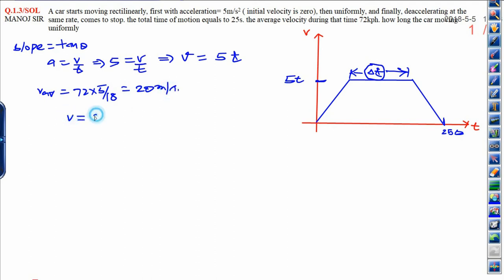If velocity is given, distance can be calculated. Distance equals v times t. When you put the value of v, v is 20, and the total time taken is 25, it will be 500 meters. The distance taken is 500 meters during the whole journey and time is 25 seconds.